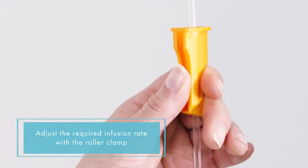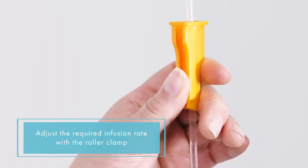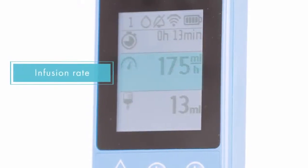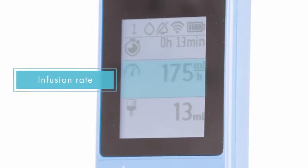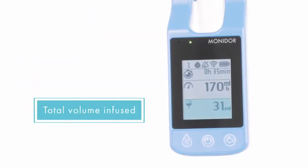Adjust the required infusion rate with the roller clamp. The device displays the accurate flow rate. The MoniDrop displays the total volume infused and the total treatment duration.